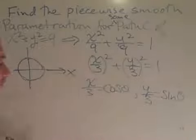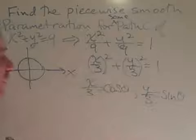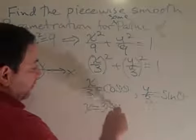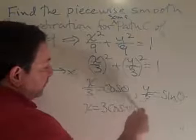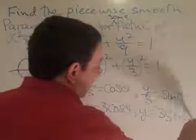In both equations, multiplying both sides by 3, I get x is equal to 3 cosine theta, and y is equal to 3 sine theta.